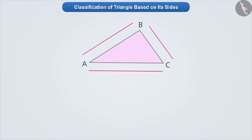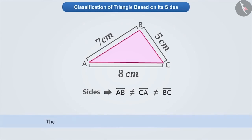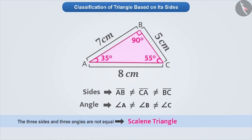Look at this triangle. If we take the measurement of its three sides, then we will know that all its three sides are not equal. Such triangles whose sides are not equal are called scalene triangles. If we take the measurement of its angles, then we will know that its angles are not equal. In this way, we can say that if all three sides of a triangle are not equal, then its angles are also not equal.